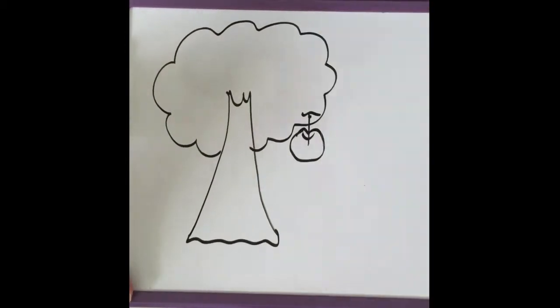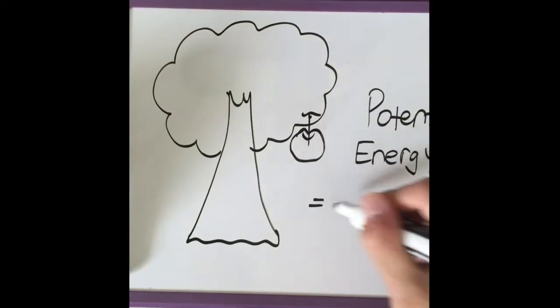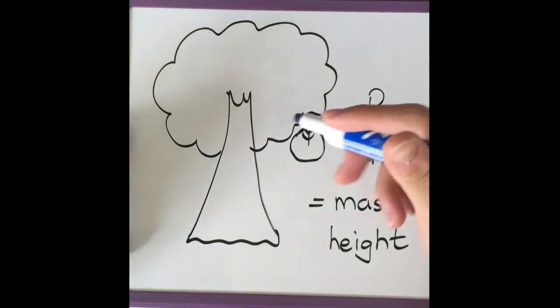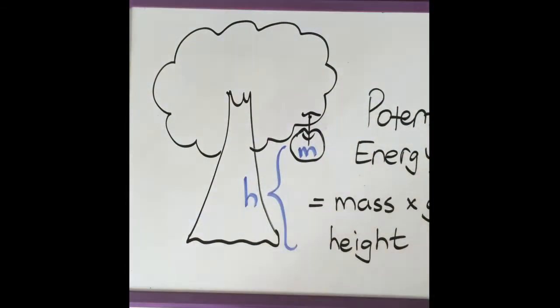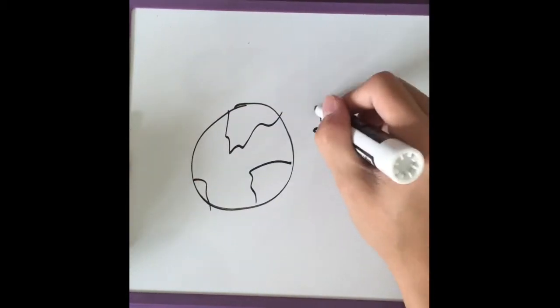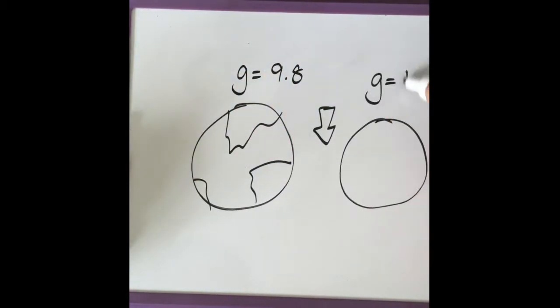The heavier and higher up the object is, the more gravitational potential energy there is. The formula is mass times gravity times height. The gravity's value in the formula varies on the location. It will be 9.8 on the Earth and 1.6 on the Moon.